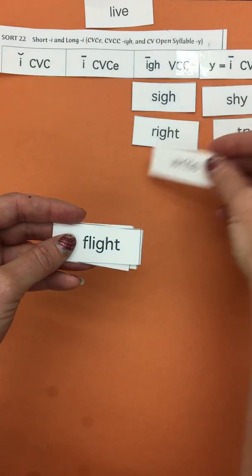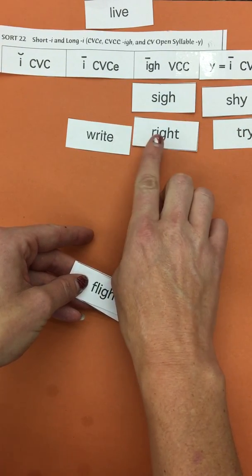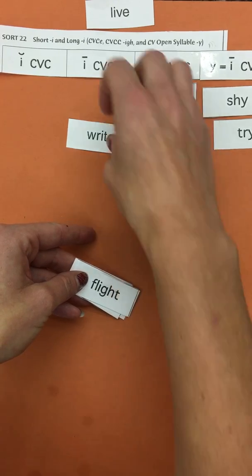Right? Here we have the homophone. They make the same sound, homo, same, phone, sound, but they're spelled differently.